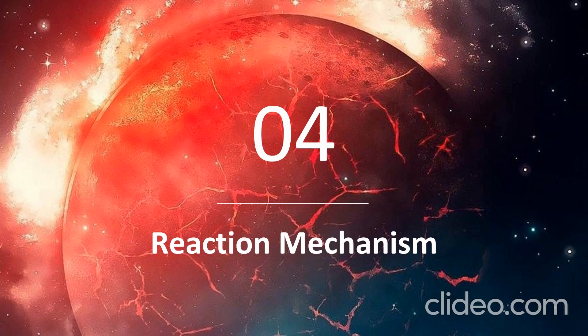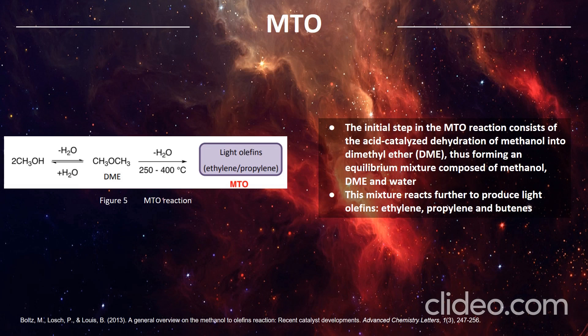For the reaction mechanism, the MTO reaction is shown in Figure 5. The initial step consists of the acid-catalyzed dehydration of methanol into dimethyl ether (DME), forming an equilibrium mixture of methanol, DME, and water. This mixture reacts further to produce light olefins such as ethylene, propylene, and butenes.